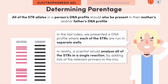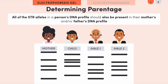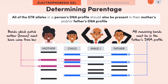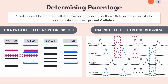Here we have the DNA profiles of a mother, her child, and two potential fathers. Since we know who the mother is, we can assume the bands in the child's DNA profile that match the mother's must have come from her. Then all of the remaining bands in the child's DNA profile must be present in the father's. We could also use an electropherogram to determine parentage, and the same idea applies.